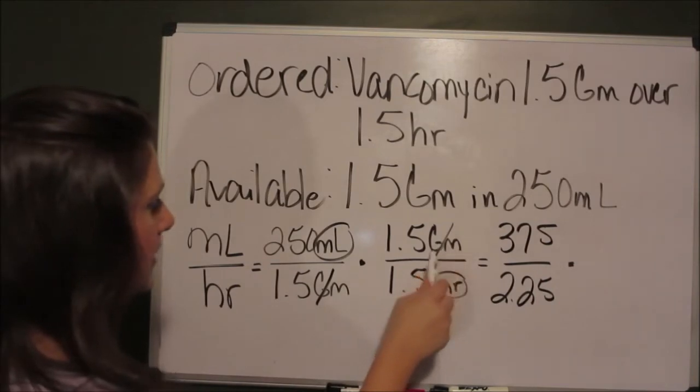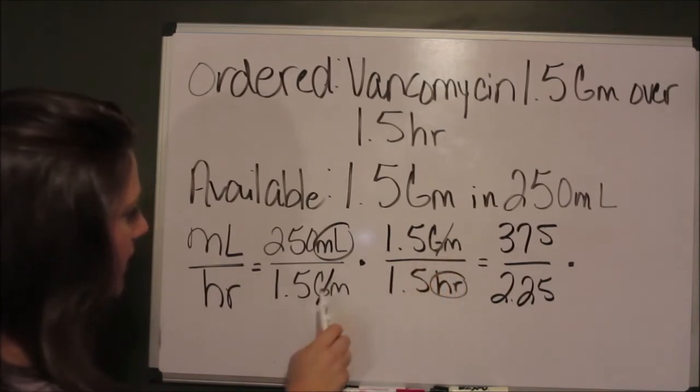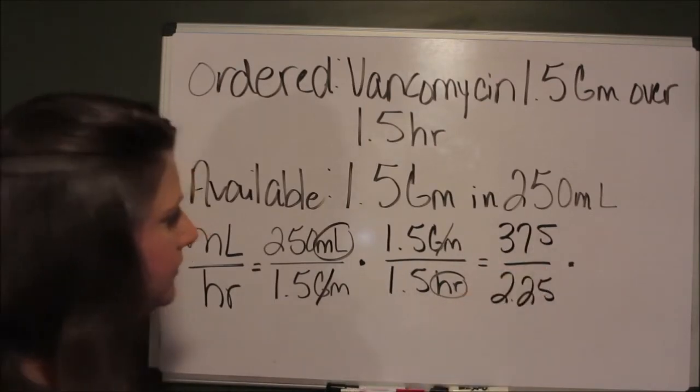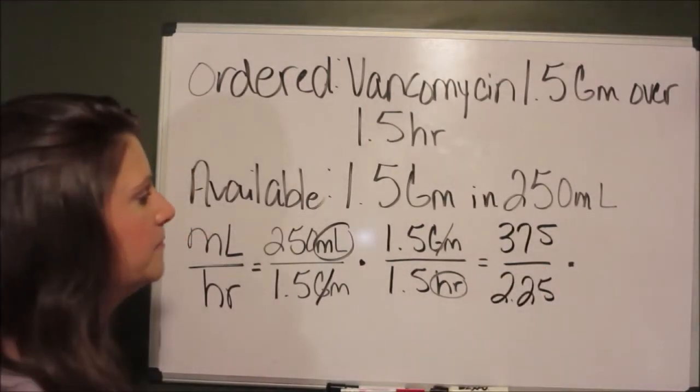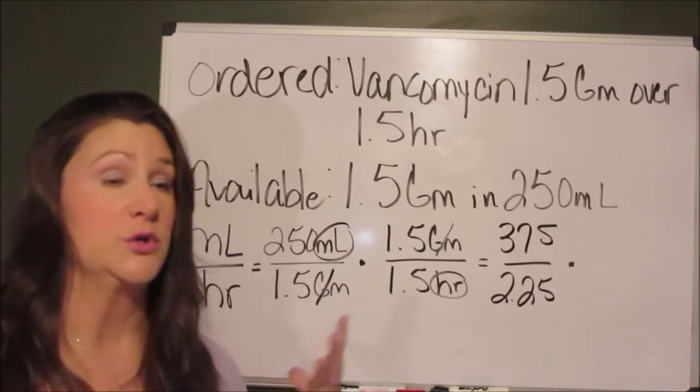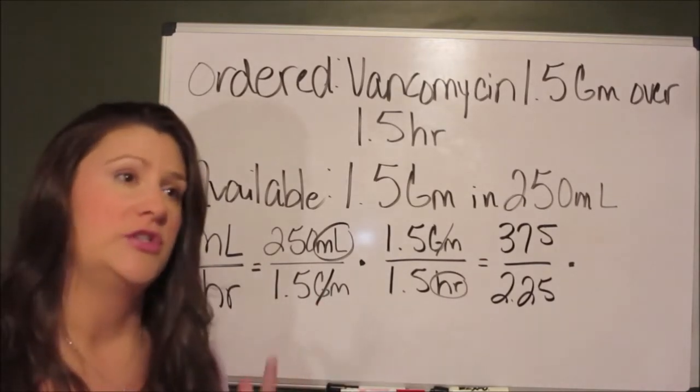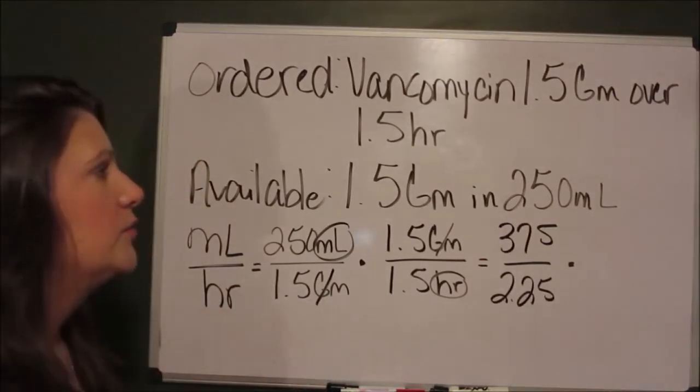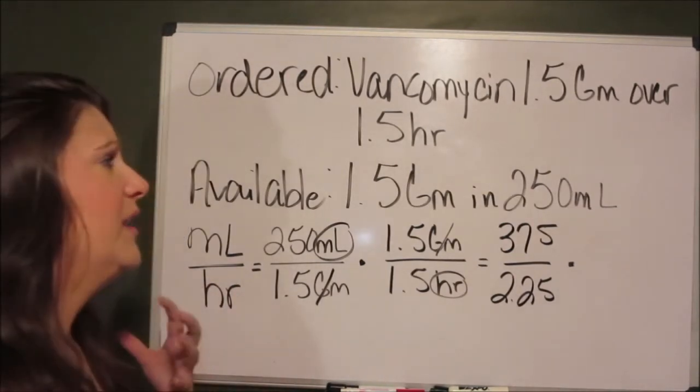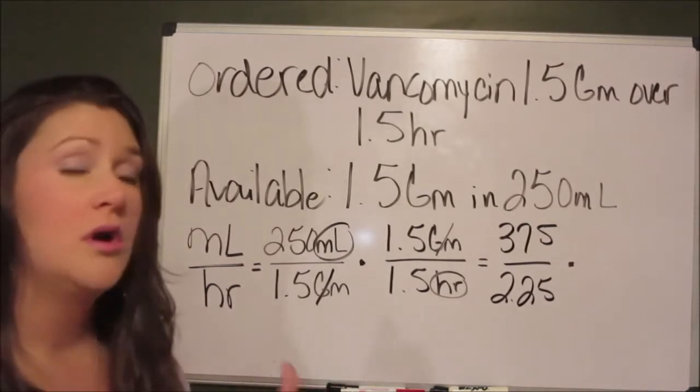We are left with milliliters per hour because the grams cancels out the grams. If you multiply these out, you get 375 over 2.25. That equals 166.7 milliliters per hour. I've hung vanc a million times so I just know what the answer is. But if you understand this method and these steps, which by the way is called dimensional analysis, then you'll be able to arrive at these correct answers every single time. So let's try one more, even more complex calculation next.